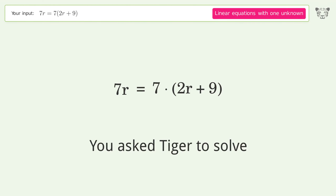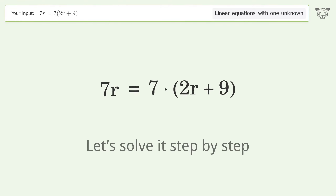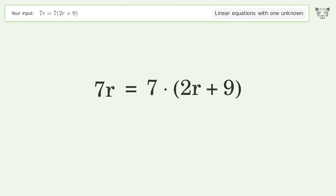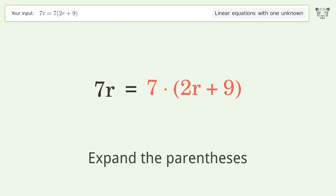You asked Tiger to solve this. It deals with linear equations with one unknown. The final result is r equals negative 9. Let's solve it step by step.